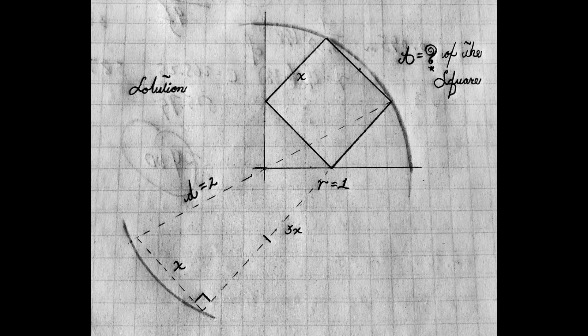So I happen to know that that makes a 45, 45, 90 triangle and that will extend the square three times across to get to the other side.